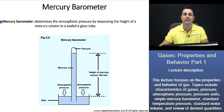Let's begin here with a definition. Mercury barometer determines the atmospheric pressure by measuring the height of a mercury column in a sealed glass tube.